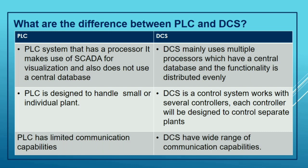What are the differences between PLC and DCS? A PLC system has a single processor, makes use of SCADA for visualization, and does not use a central database. DCS mainly uses multiple processors which have a central database and its functionality is distributed evenly. PLC is designed to handle small or individual plants, while DCS is a control system that works with several controllers, each designed to control a separate plant. PLC has limited communication capabilities, whereas DCS has a wider range of communication capabilities.